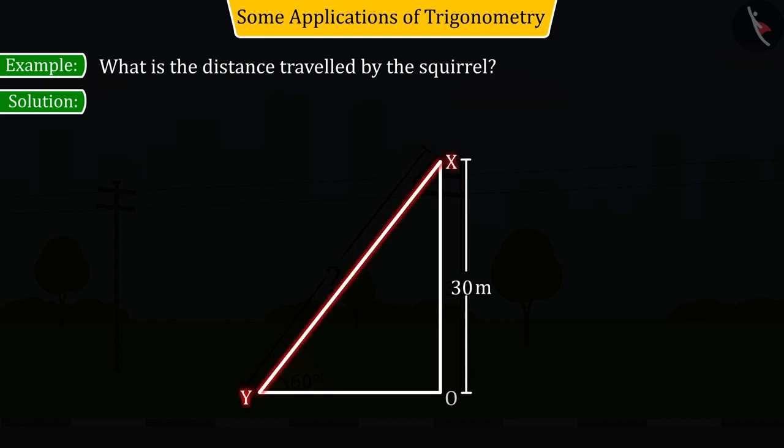Where XY is 60 degrees inclined to the horizontal plane, from which we get a right-angled triangle XOY.